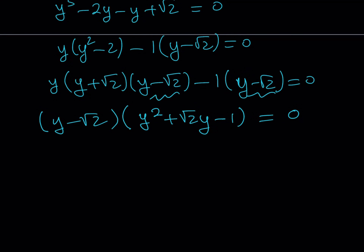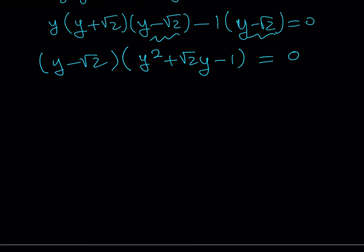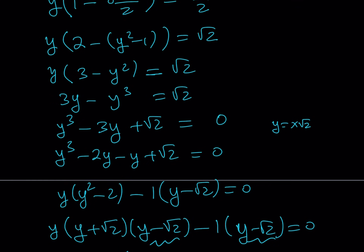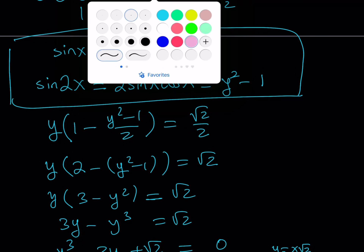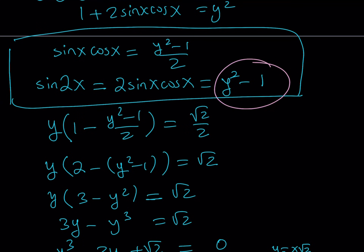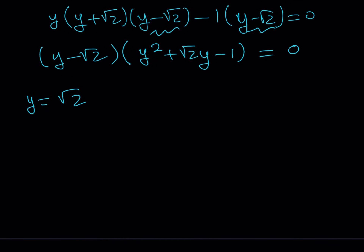As you can see, we have a linear factor and a quadratic factor. The linear factor is easy to solve — obviously y equals root 2. Remember, our goal was to find sine of 2x, and sine of 2x is equal to y squared minus 1. So I can replace y with root 2: y squared will be 2, and 2 minus 1 is 1. So from here, we get that sine of 2x is equal to 1.